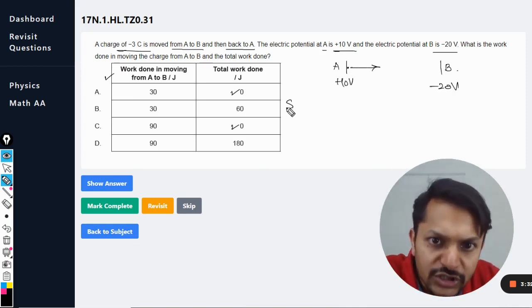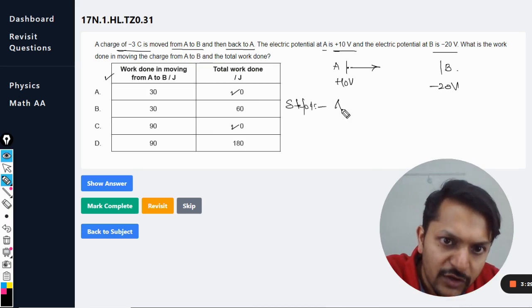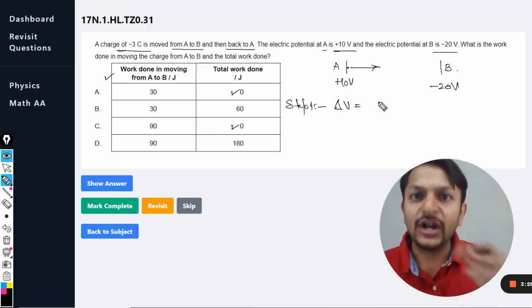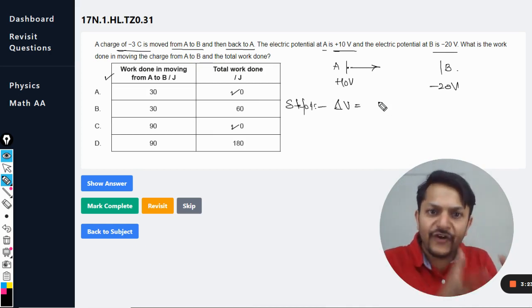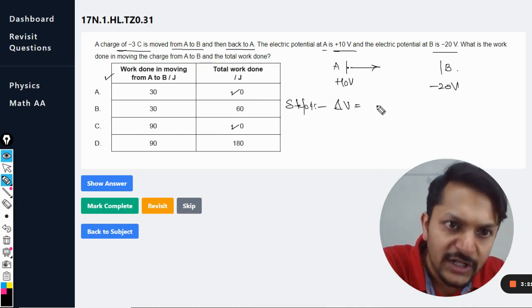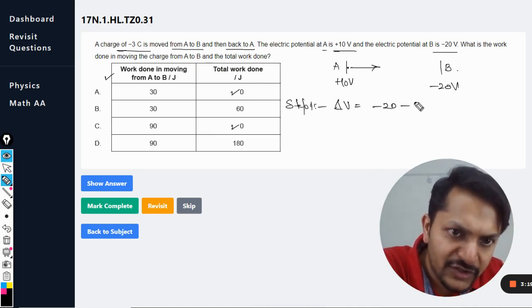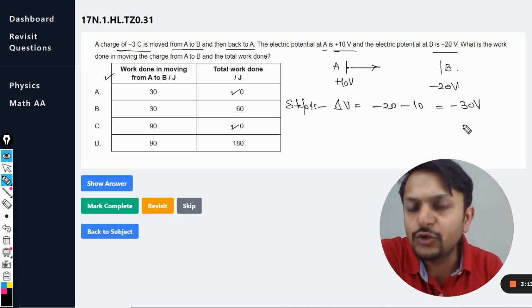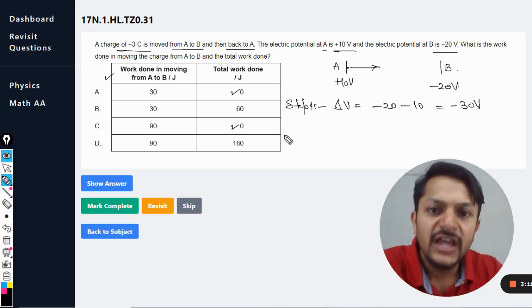Step number 1: First of all we need to find the total change in potential that the charge is undergoing. Obviously it is final potential minus the initial potential. So final is -20 minus 10, so overall it will be -30 volts. So this is the total change in potential difference.